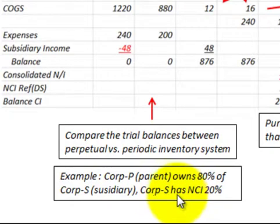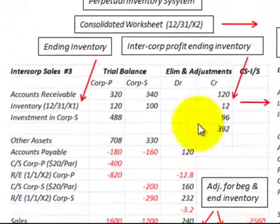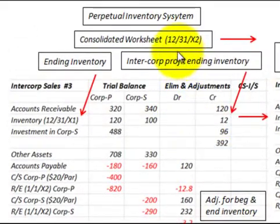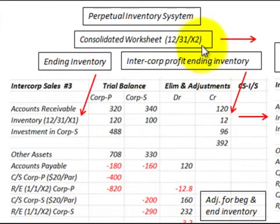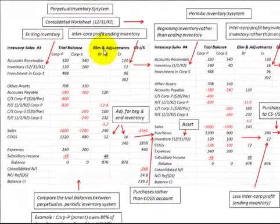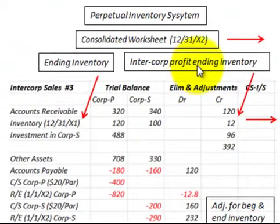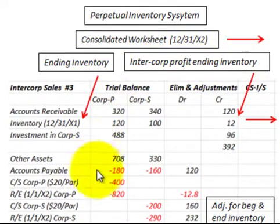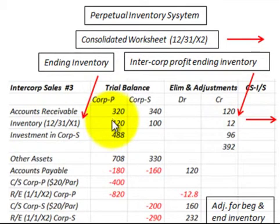Corporation S, the subsidiary, has a non-controlling interest of 20%. Our comparison is going to be based on a consolidation worksheet for the year ending 12/31/X2, or the second year. Let's go through the basic differences between the perpetual and the periodic inventory systems, based on the accounts used in the trial balances and the differences in those trial balance accounts.